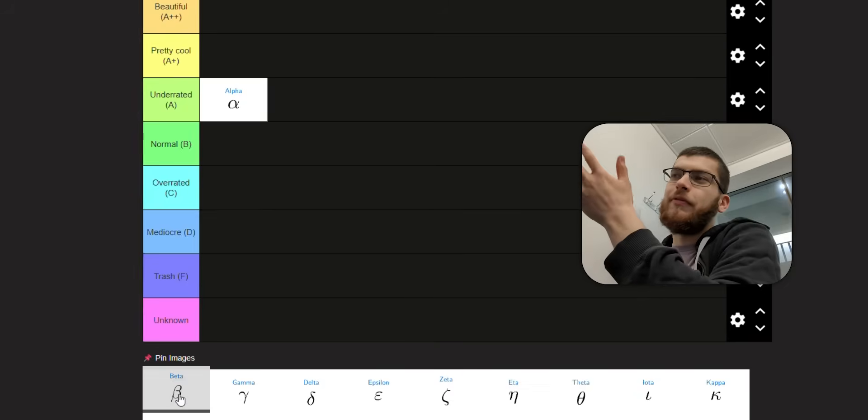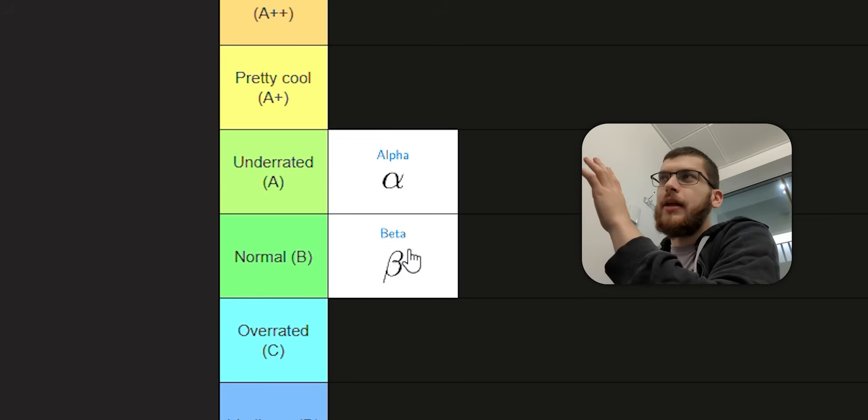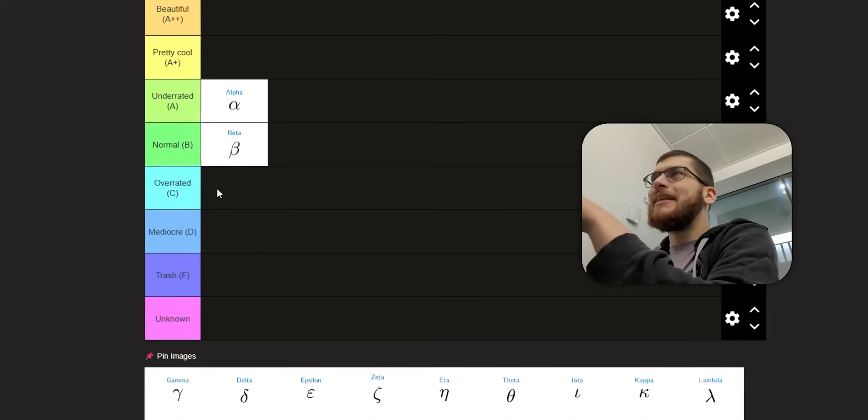Beta, you can write it in one stroke, so that's a really good positive for ease of use. In terms of its beauty, I would say it's not very beautiful. It looks kind of a bit funky. So I'm going to put it a bit lower than alpha. I'm going to put beta in beta tier.